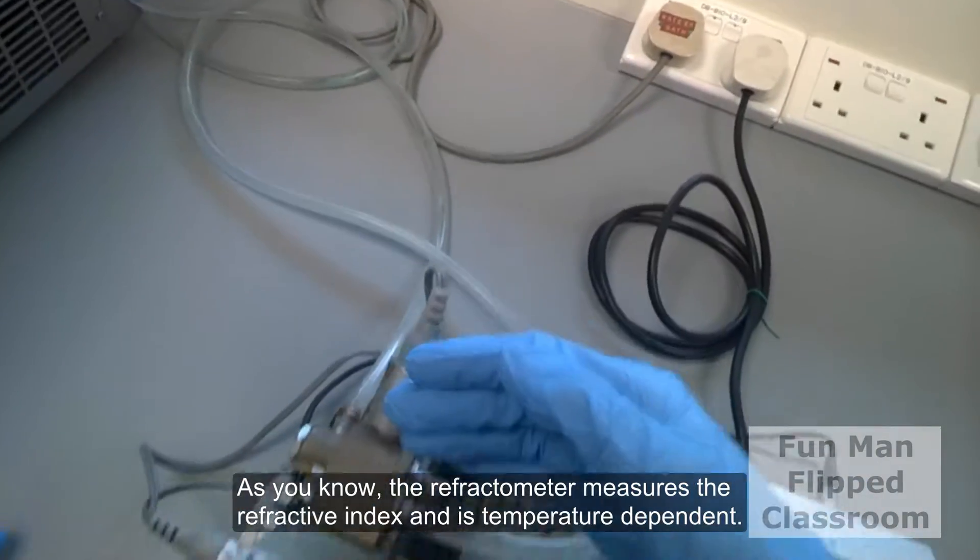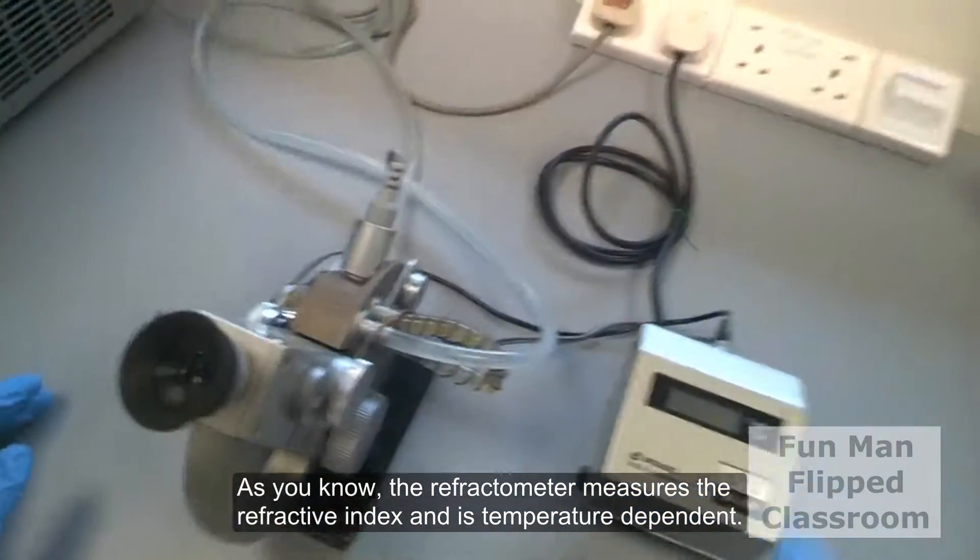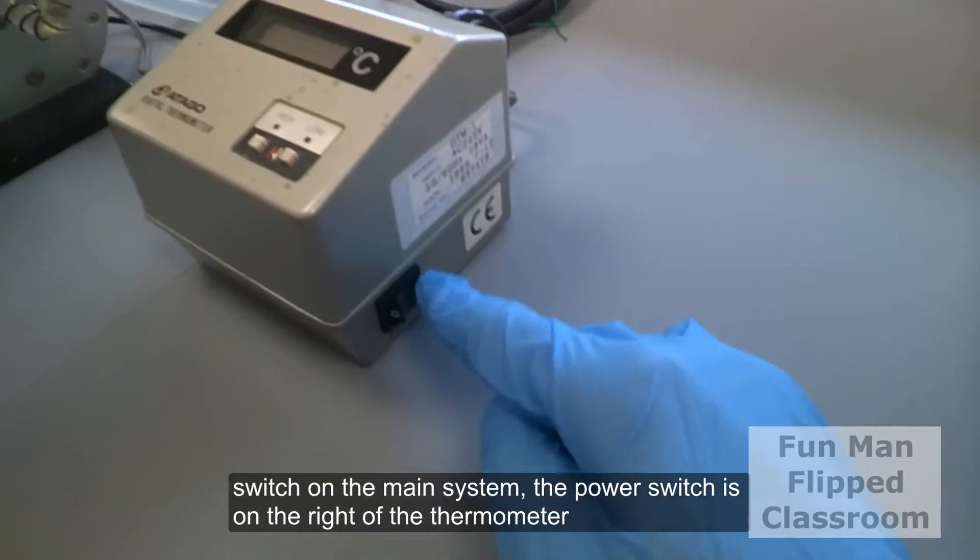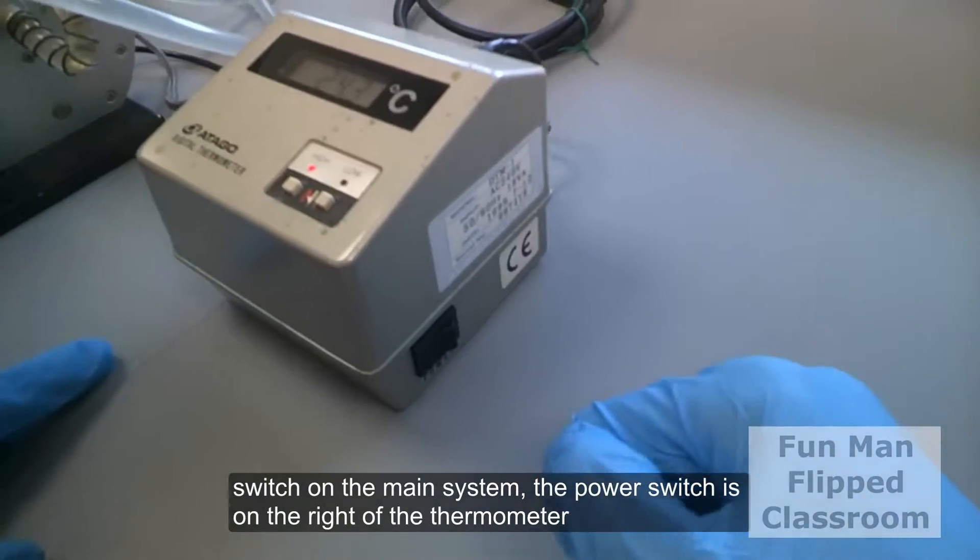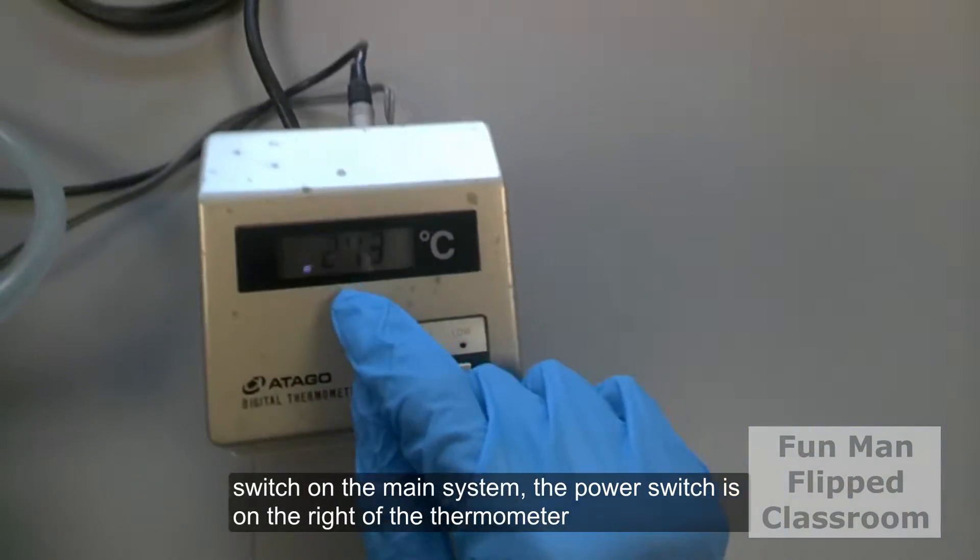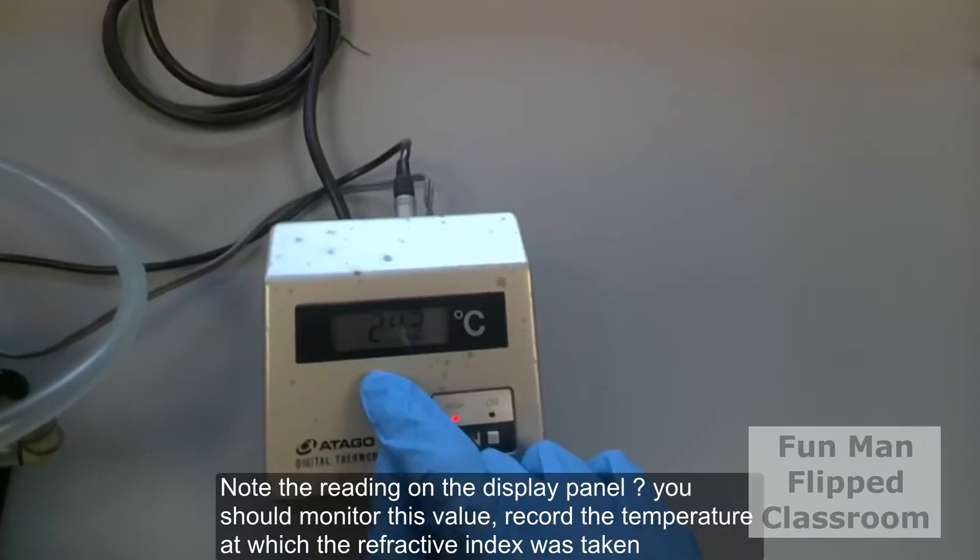As you know, the refractometer measures the refractive index and is therefore temperature dependent. Here, switch on the main system. The power switch is on the right side of the thermometer. Note the reading on the display panel. You should monitor this value.